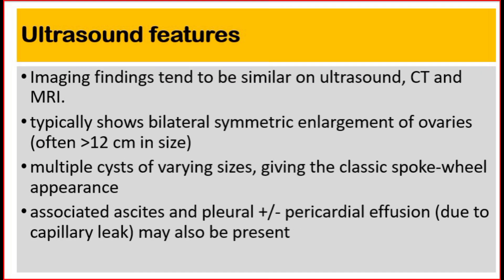Ultrasound features. Imaging findings tend to be similar on ultrasound, CT, and MRI. Ultrasound shows bilateral symmetric enlargement of ovaries, often more than 12 centimeters in size, with multiple cysts of varying sizes, giving the classic spoke-wheel appearance. Associated ascites and pleural, plus or minus pericardial effusion, due to capillary leak, may also be present.